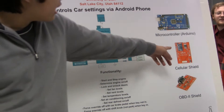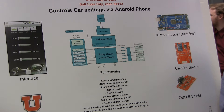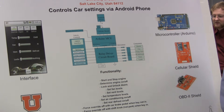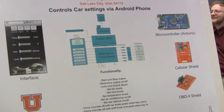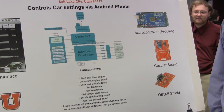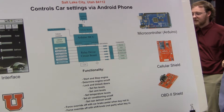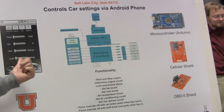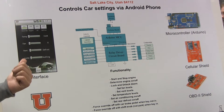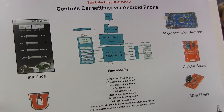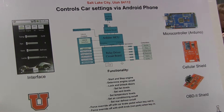The cellular shield is attached to a microcontroller to parse out the message and perform the required settings. The OBD2 shield checks what the car's current setting is — such as if the car is on right now. So when we send a message over, for example to turn the engine on, the OBD2 shield will let us know not to turn it on because it's already on.